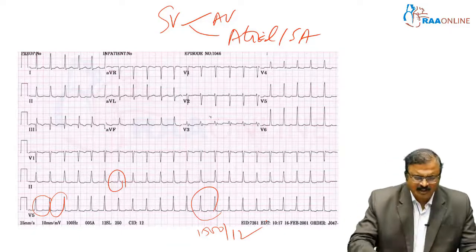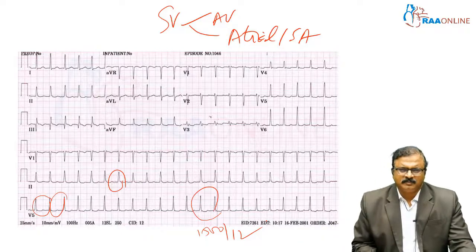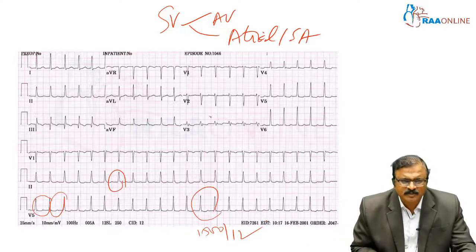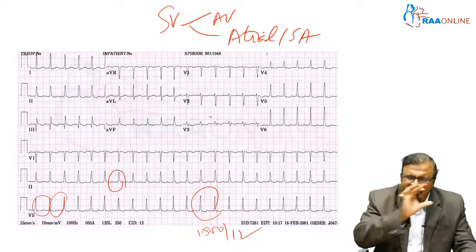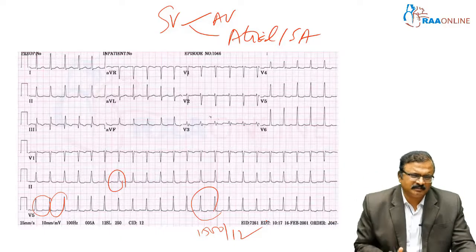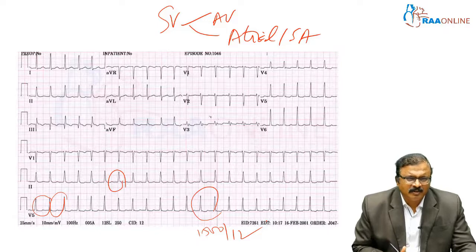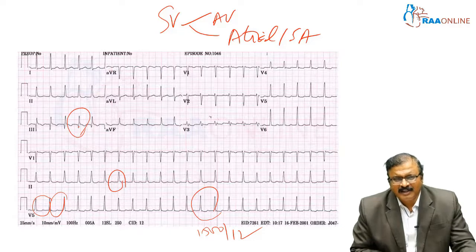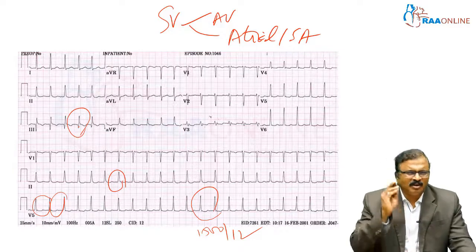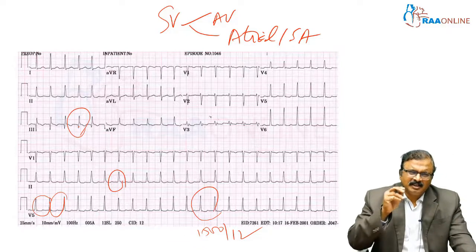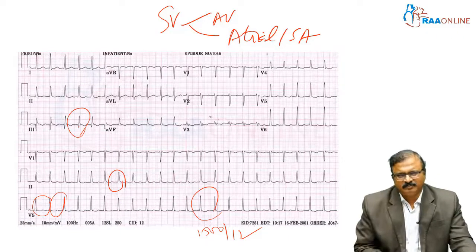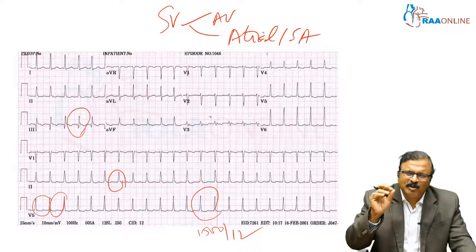If the RR interval is definitely irregular with bizarre P waves, that is atrial fibrillation — irregular RR is almost always atrial fibrillation. Apart from this, non-specific Q and T inversion is seen in lead 3, which is not significant unless there is also S1 in lead V1 and RV strain in V1–V2. The most common manifestation of pulmonary embolism is sinus tachycardia.